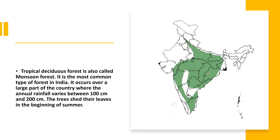Here the rainfall ranges between 100 to 200 cm. The trees shed their leaves in the beginning of the summer season, which is why they are known as deciduous forests. Deciduous forests have one major characteristic: they shed their leaves at least once a year. Since the trees are found in pure stands — that is, found in one particular region — it appears that the forest has become bare when the trees shed their leaves.